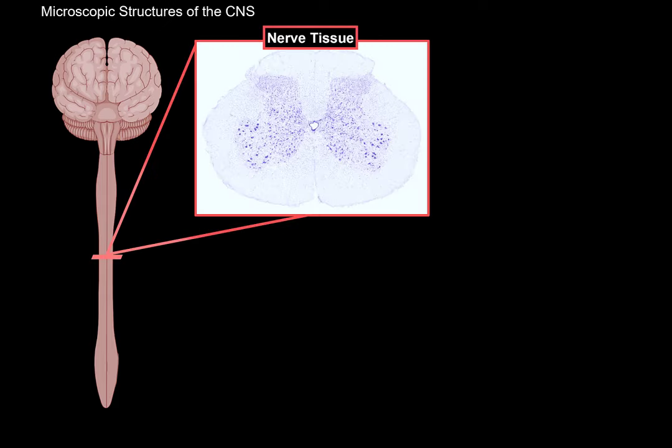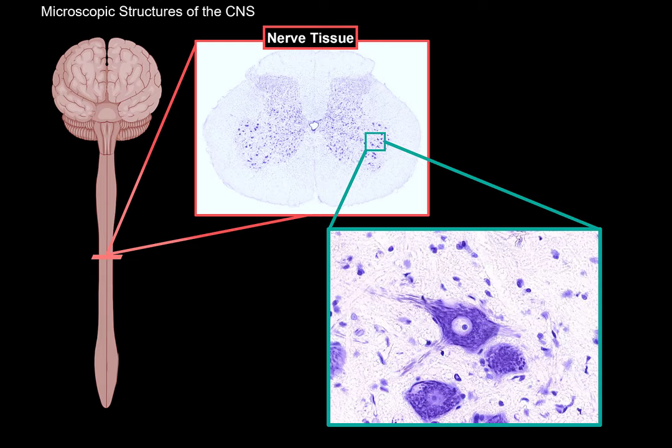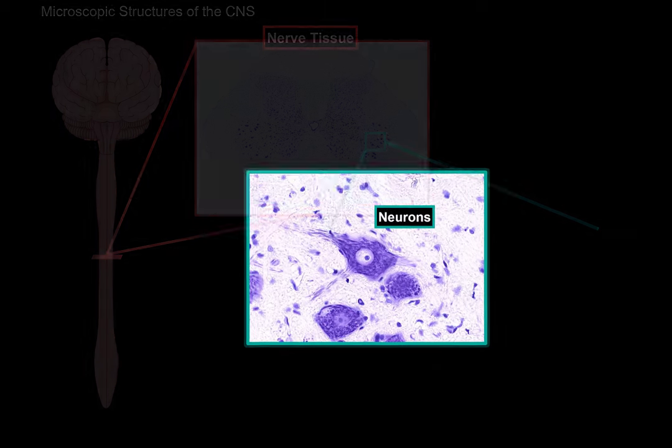And so I say neurons because that's the primary type of cells in our nervous system. If we take a segment of the spinal cord and look at it underneath the microscope, you will see that they're composed of nerve tissue. And if we take a small segment of the nerve tissue, you will find a lot of these cells we call a neuron. So let's talk about the neuron a little bit.